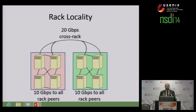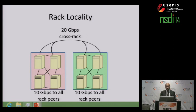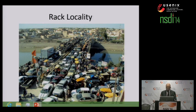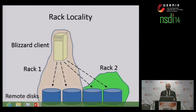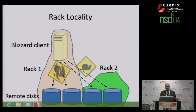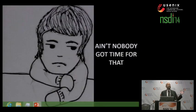The next problem is rack locality. In some data center architectures, it's much faster for a machine to talk to a peer inside its own rack than outside, because cross-rack links are often oversubscribed. For example, two machines in the same rack can communicate at full 10-gigabit speeds, but there's only 20 gigabits of bandwidth between two racks. So if all four machines on the left try to talk to all four machines on the right, we get an old-fashioned traffic jam. We went to all this trouble to spread IO requests across multiple disks, but now some of those parallel accesses will be slow.